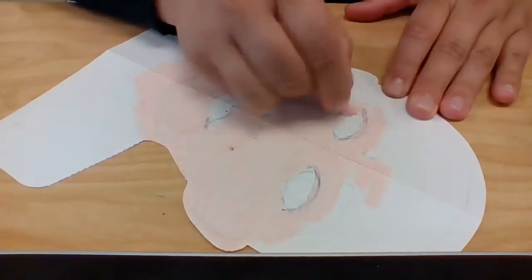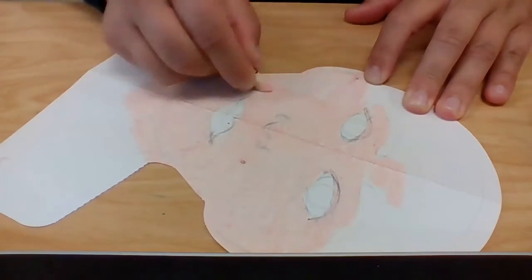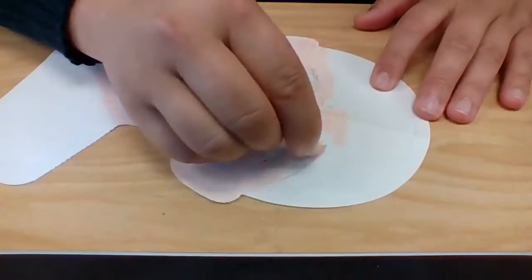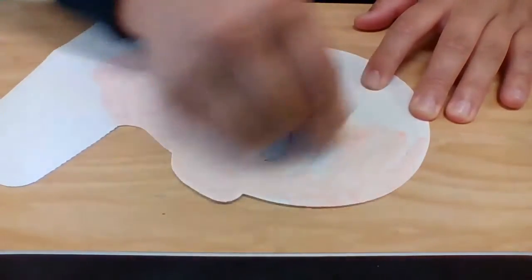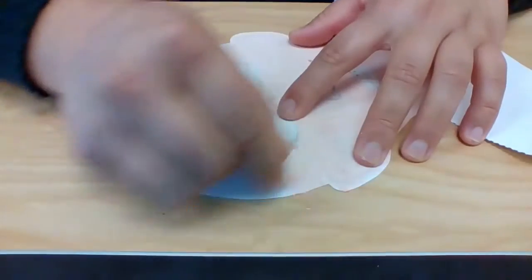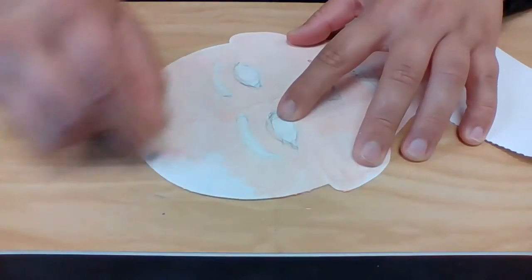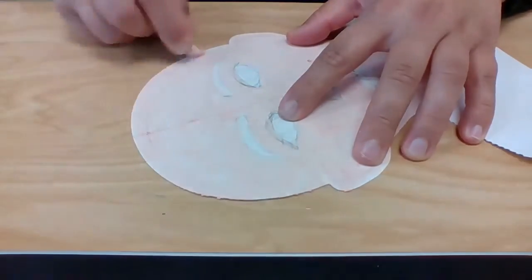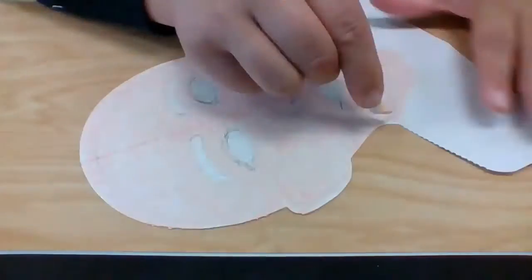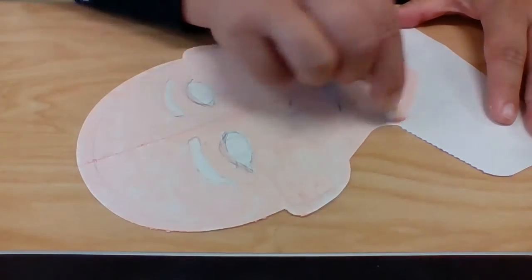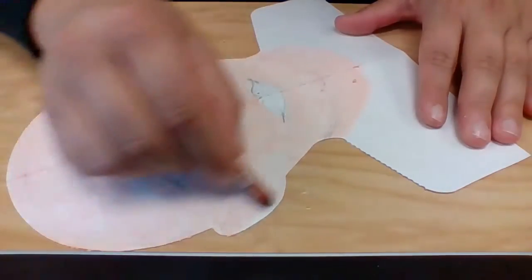With my first layer, I want to make sure that I'm pressing pretty hard so that I'm filling in the whole space. Since our skin looks smooth, we want to make sure that our coloring is also nice and smooth. I'm not coloring my forehead, because I know I'm going to glue on my hair later.